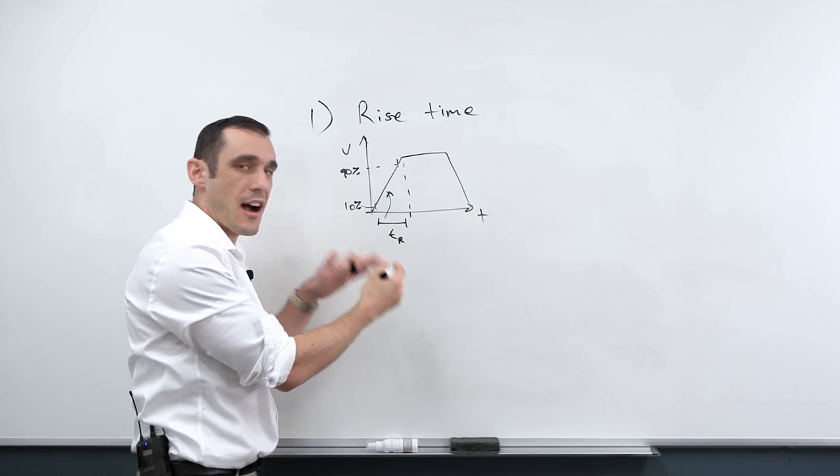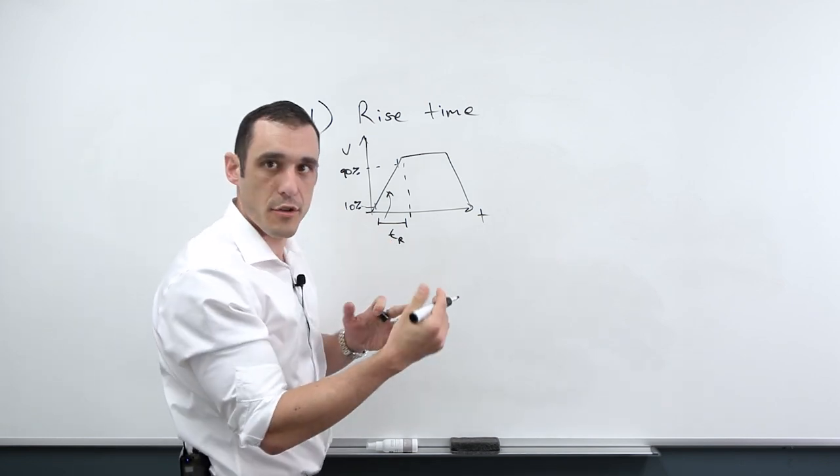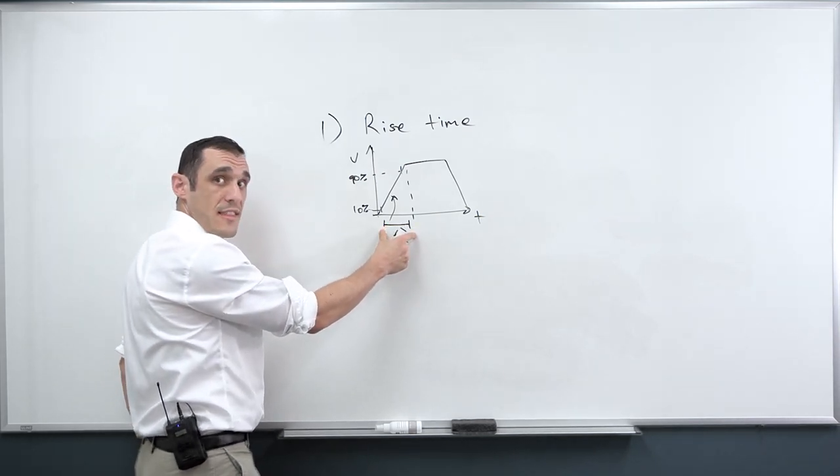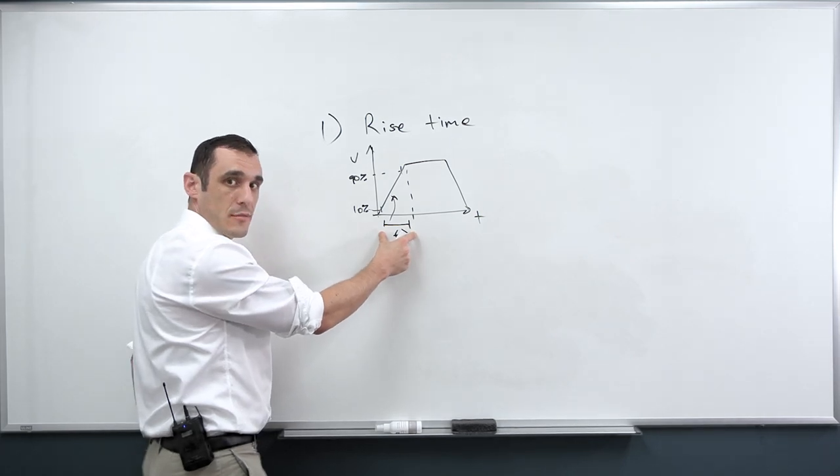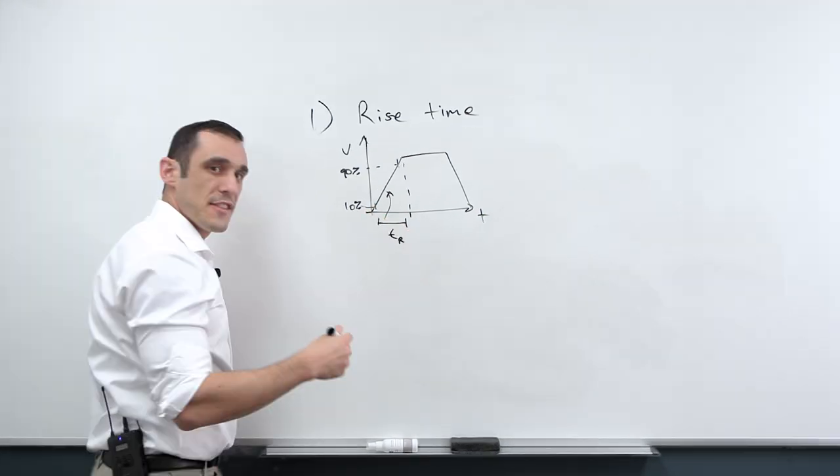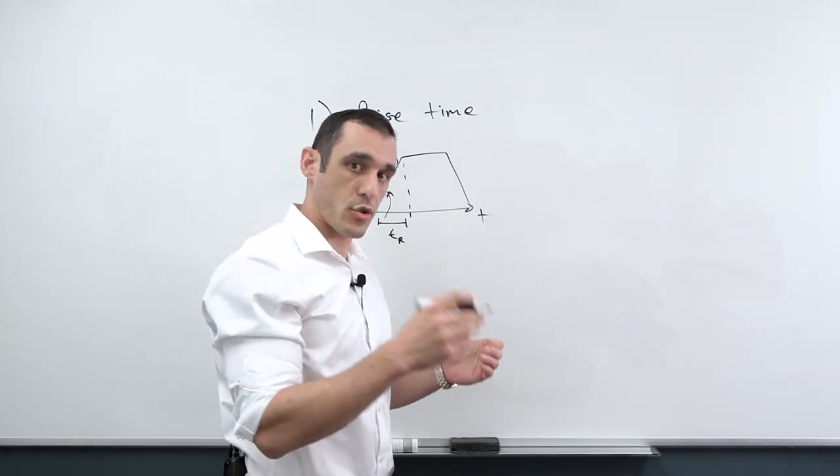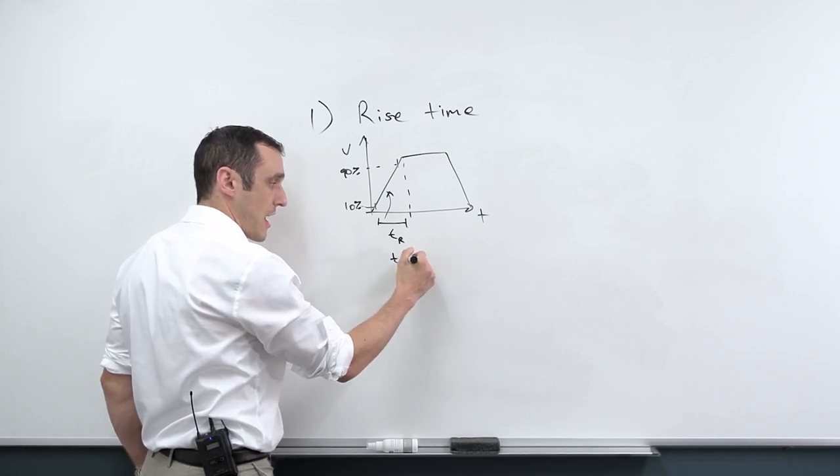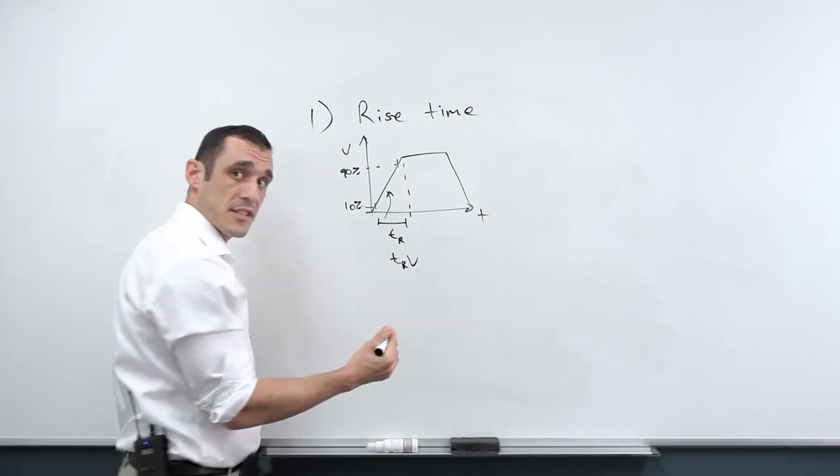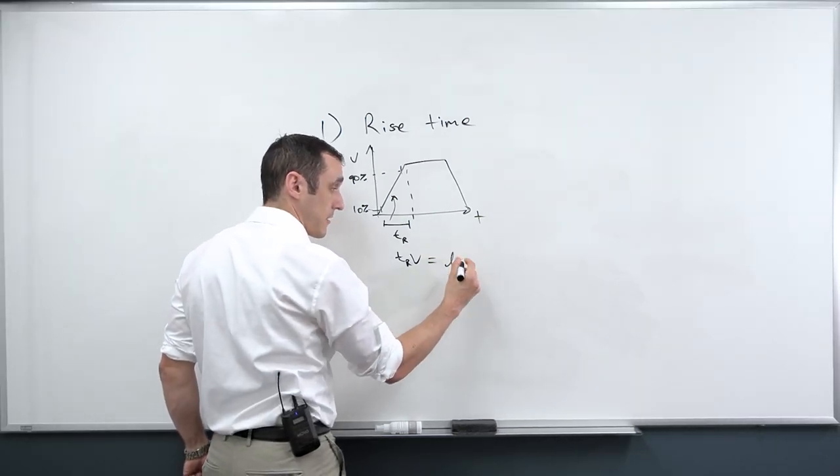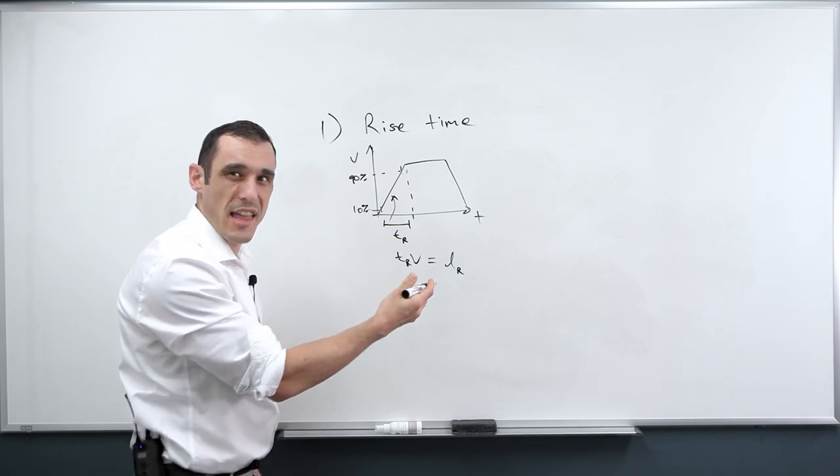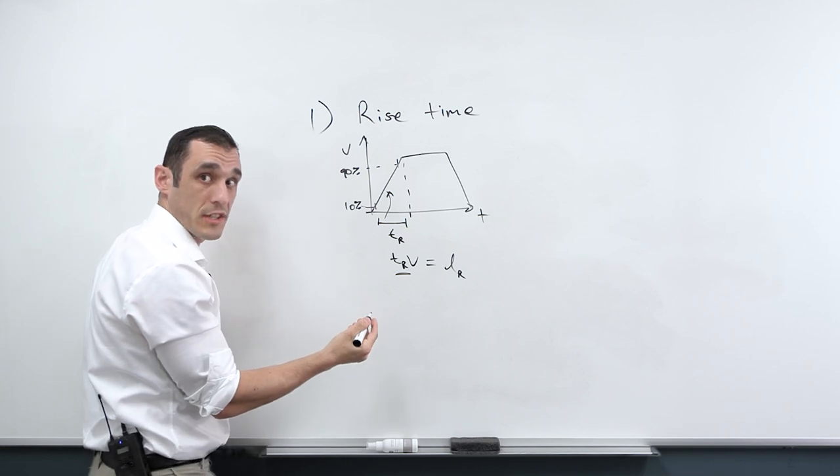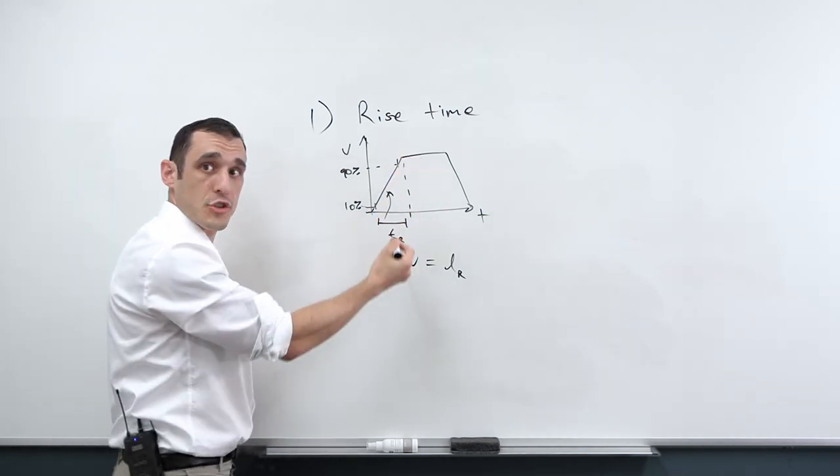So this time between here and here, T sub R, is typically used to qualify whether a trace is a transmission line. Now you might say, this is a time, a trace has length. How are you comparing those two? Well, what you do is you'll actually compare the distance that the signal travels in this time frame to the length of the trace. And this is where people start to disagree about whether or not a trace is really a transmission line or really just a simple conductor.